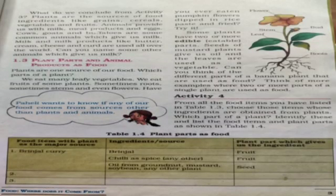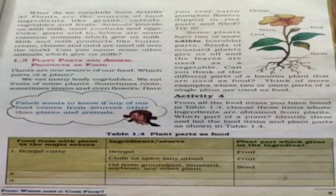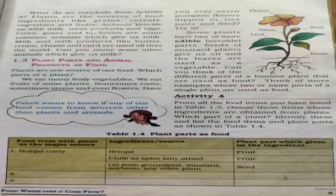Table 1.4 shows plant parts as food. For example, for brinjal curry, the ingredients are brinjal, chili, spices, oil, and mustard seeds — all from plant sources. Brinjal and chili are fruits of the plant, while oil is obtained from seeds.